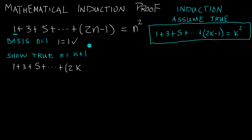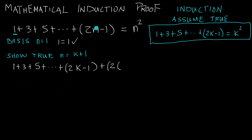We want to show it's true for n equals k plus 1, so we need to add the next term. We do that by writing plus 2 times k plus 1 — putting k plus 1 in place of n — and then that's minus 1.